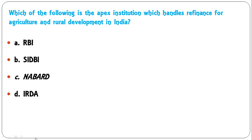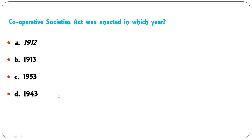Which of the following is the apex institution that handles refinance for agriculture and rural development? It is NABARD — the National Bank for Agriculture and Rural Development — that does the refinancing job and is the regulatory apex bank for rural and agriculture development. So C is the correct answer.